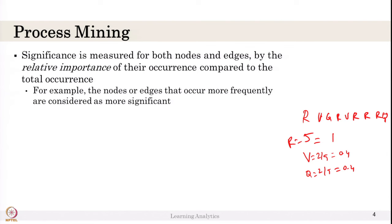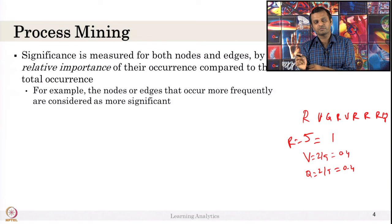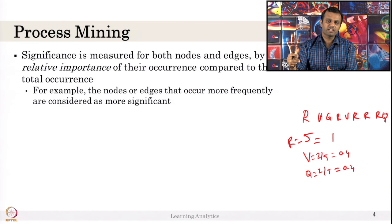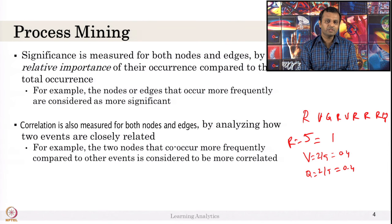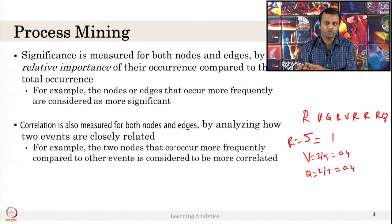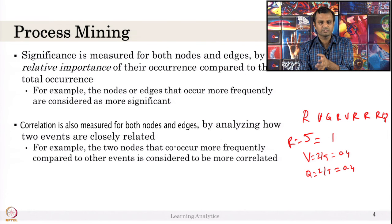Significance is computed not only for nodes but also for edges — whichever edge occurs most repeatedly compared to other edges gets significance 1, and others are computed relative to that. Correlation measures how closely two actions always occur together — which pattern is most frequent. If 'read' and 'quiz' occur most relatedly, that pair will be more correlated. This is essentially what we did in the state transition diagram — that is a kind of correlation.